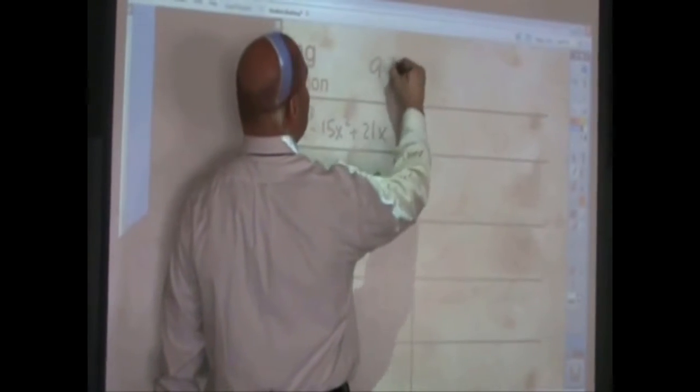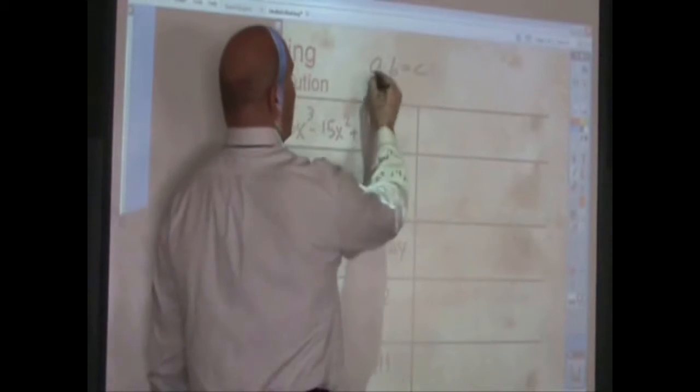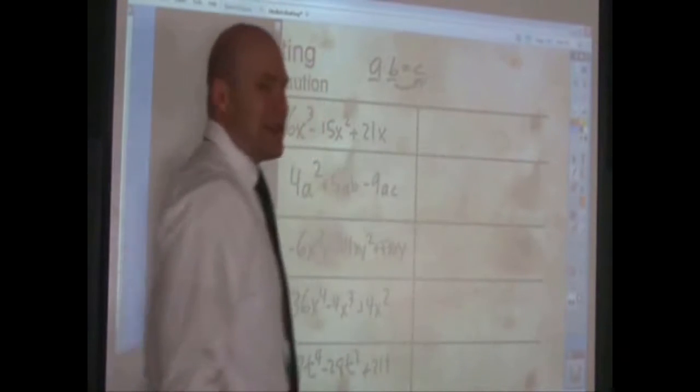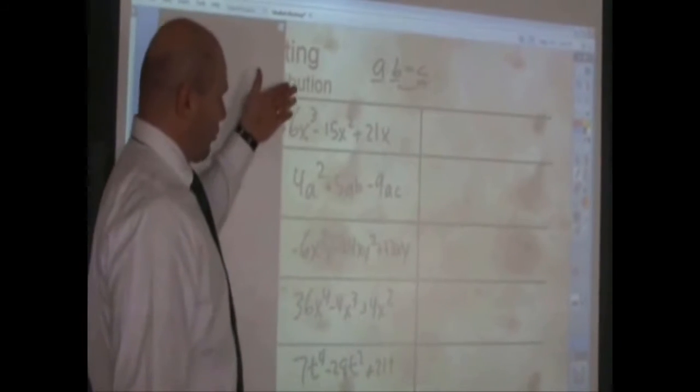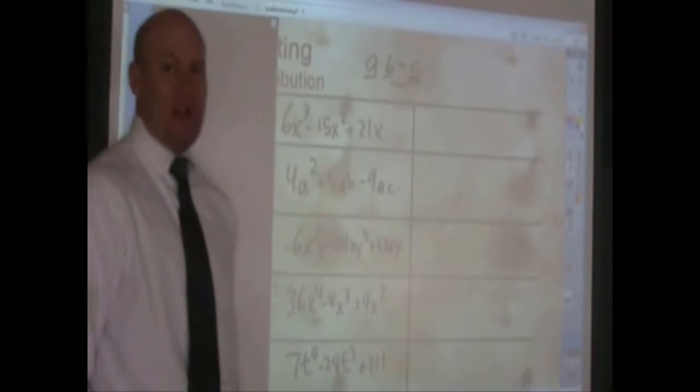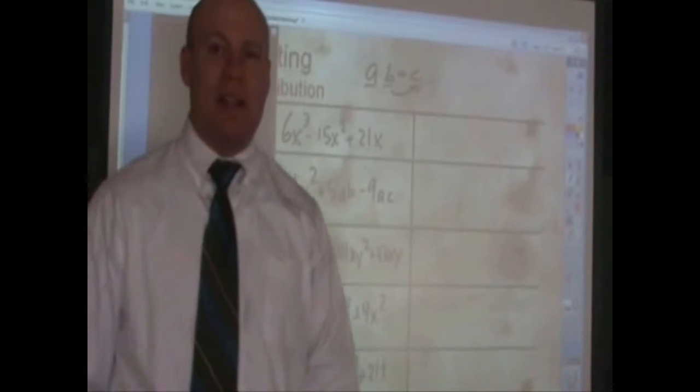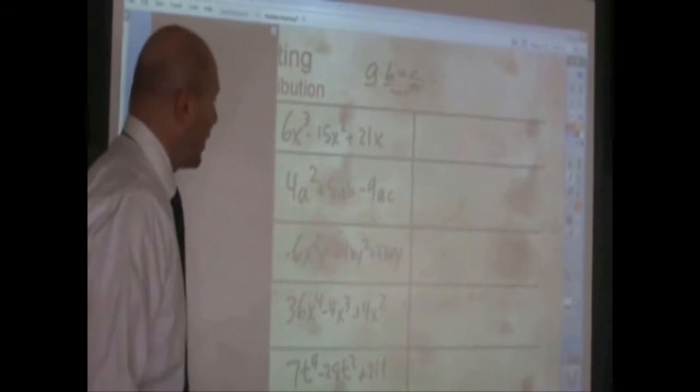This is called factoring. And what that means is this, if I have, for example, a times b is equal to c, a and b are the factors that produce c, c is the product. Well, in the factoring unit, these are products, and what we're trying to do is figure out what things were multiplied together in order to produce a particular product, right?